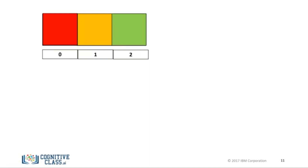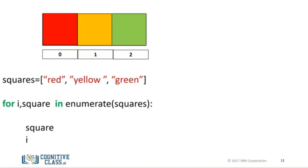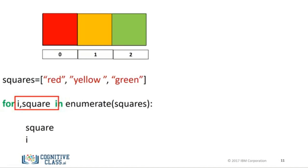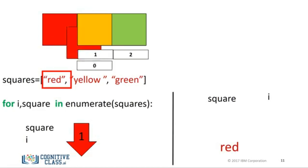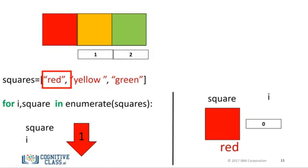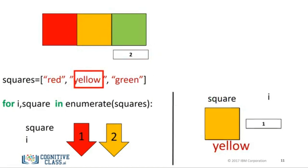This is the syntax to iterate through a list and provide the index of each element. We use the list squares and the argument of the function enumerate is the list. The variable i is the index and the variable square is the corresponding element in the list. For the first iteration, the value of the variable is red, corresponding to the 0th index, and the value for i is 0. For the second iteration, the value of the variable square is yellow, and the value of i corresponds to its index, i.e., 1. We repeat the process for the last index.